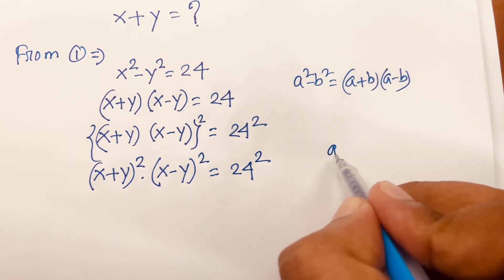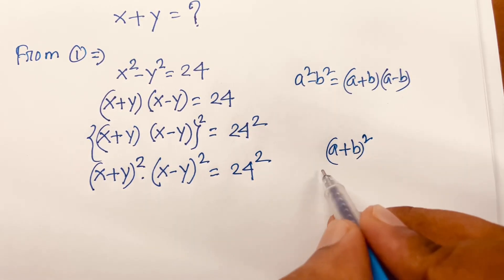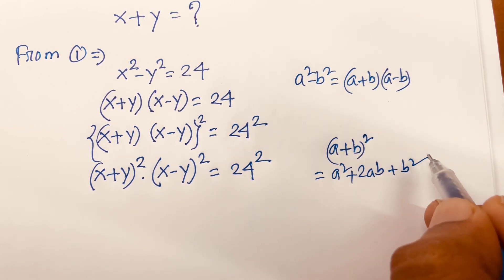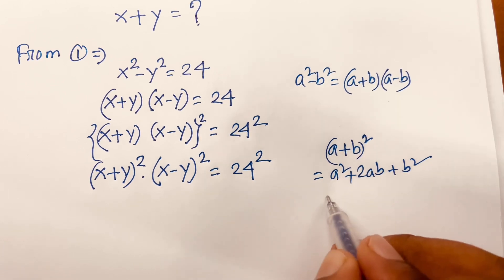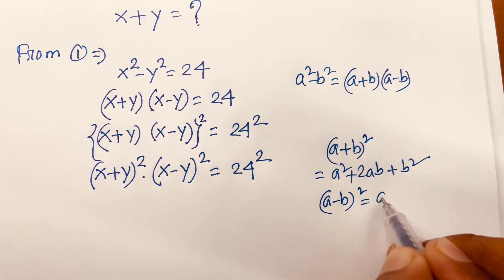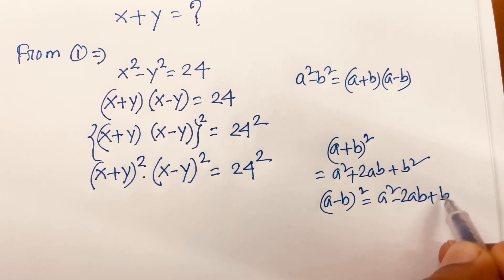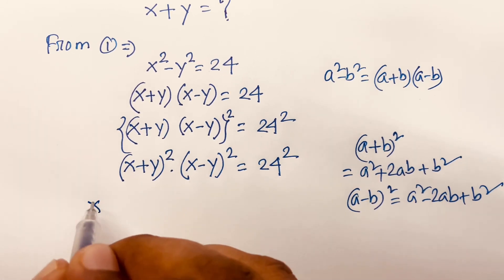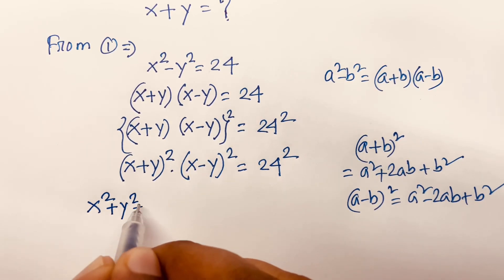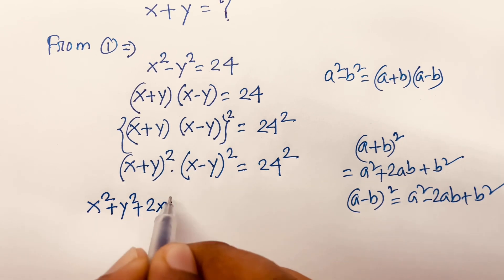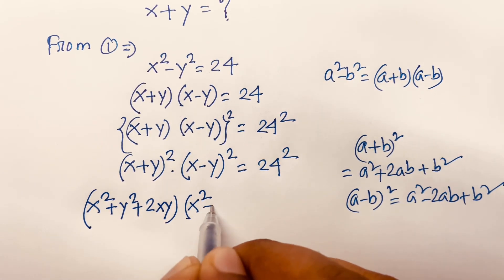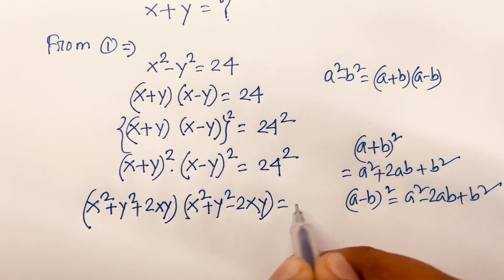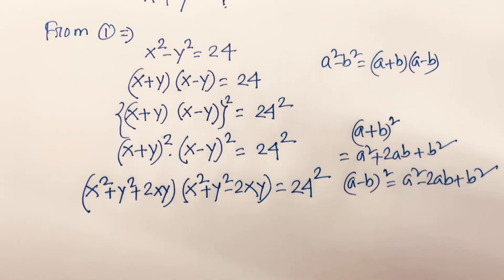We know that (a + b)² equals a² + 2ab + b², and (a - b)² equals a² - 2ab + b². According to these formulas, I can say (x² + y² + 2xy)(x² + y² - 2xy) equals 24 squared.